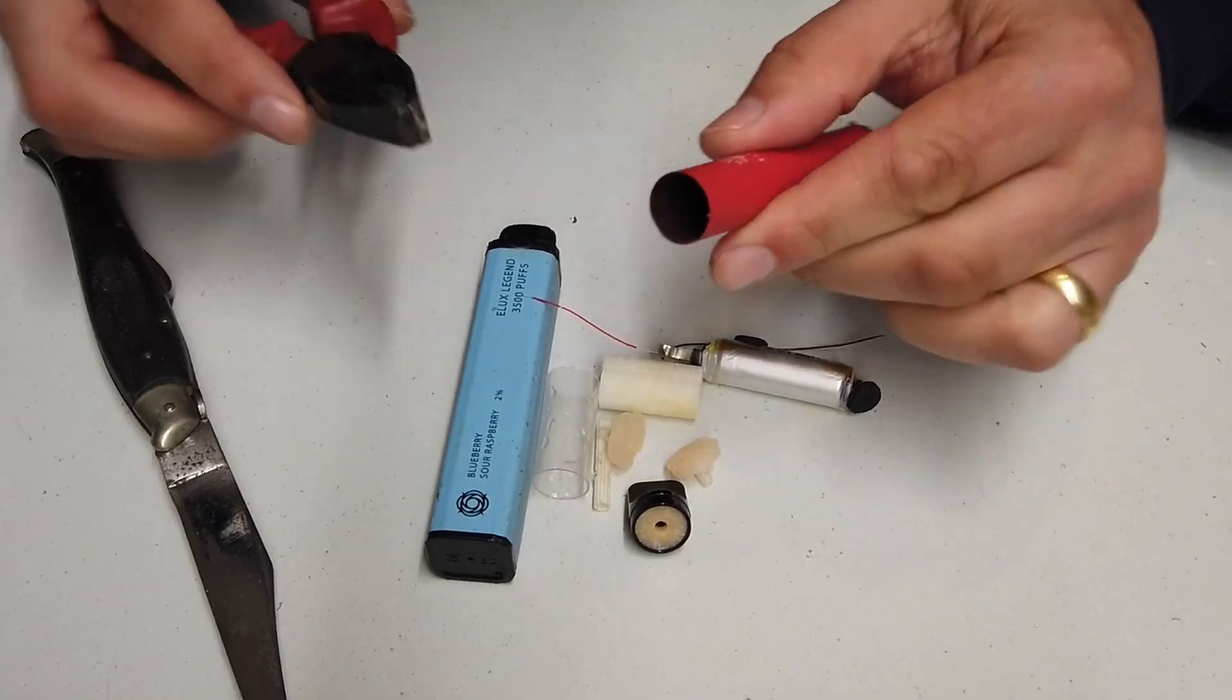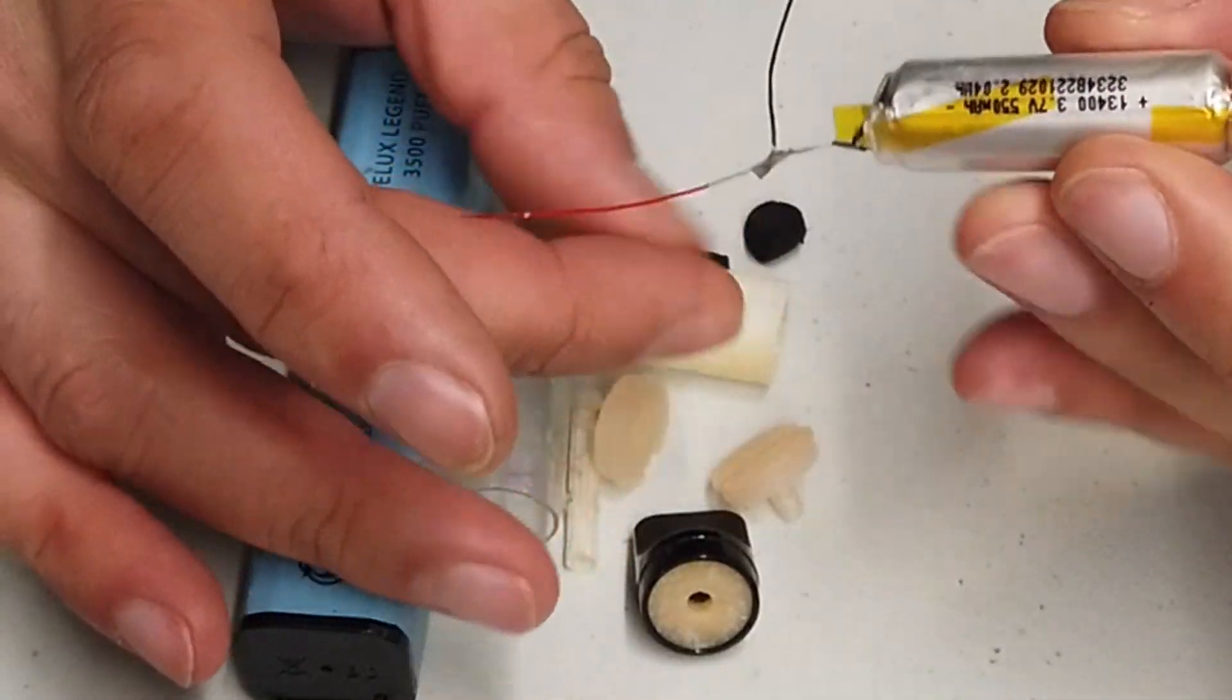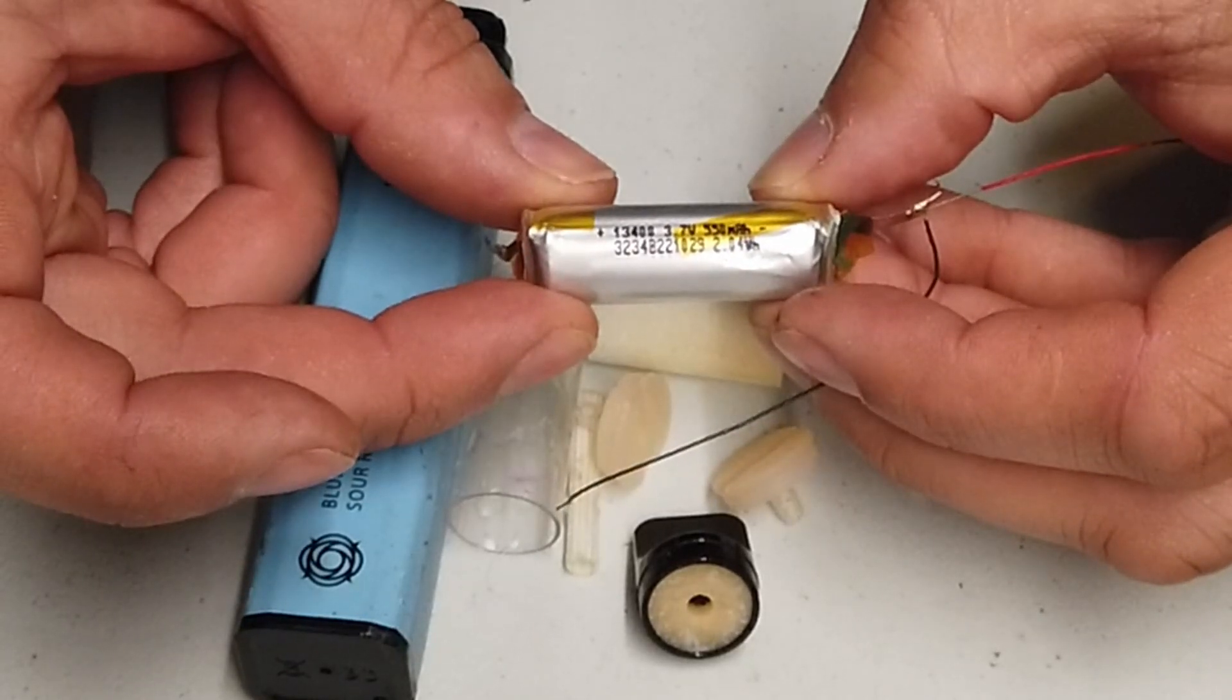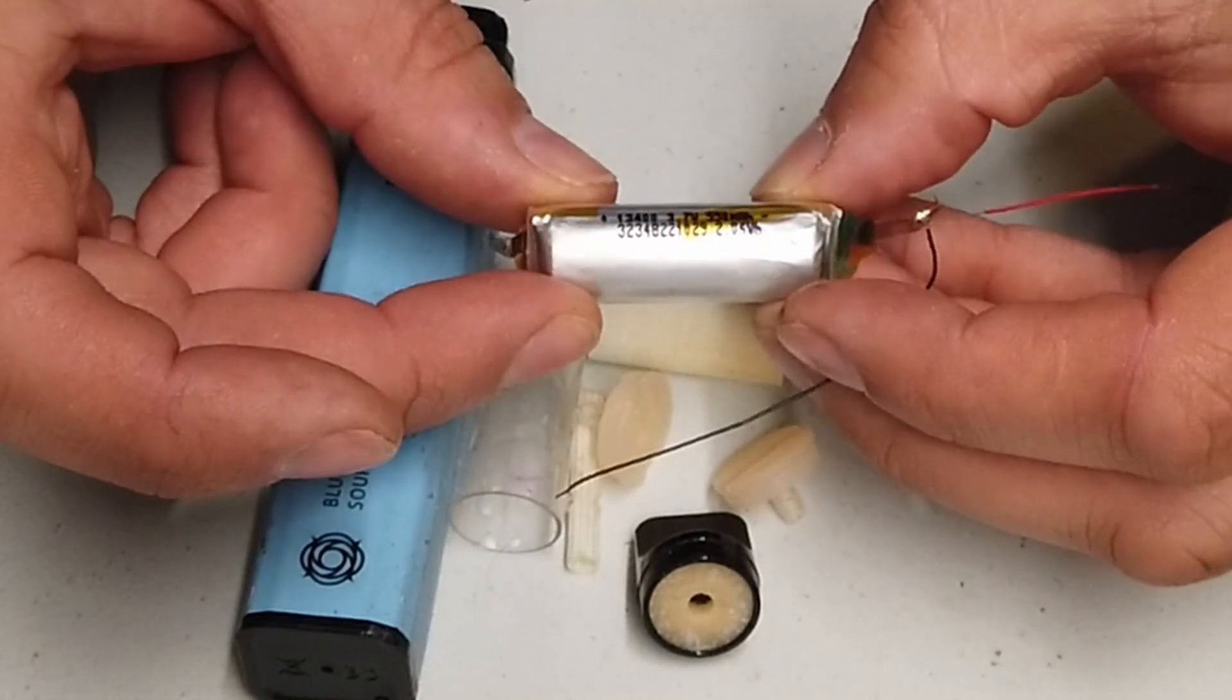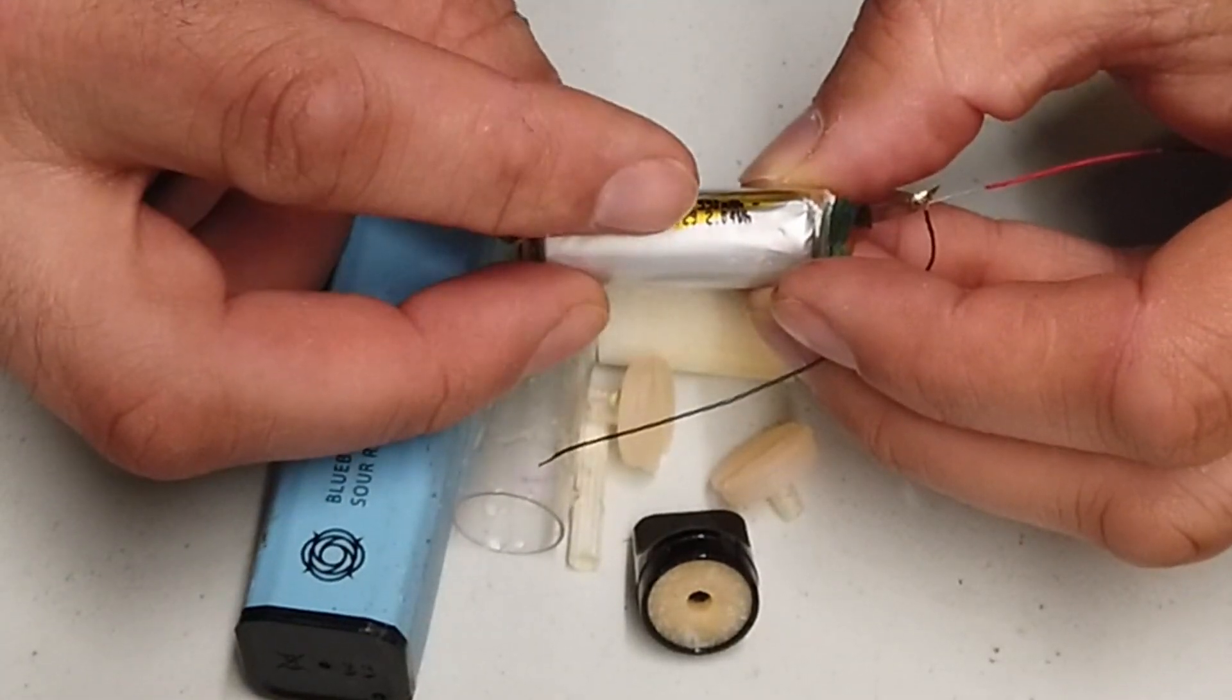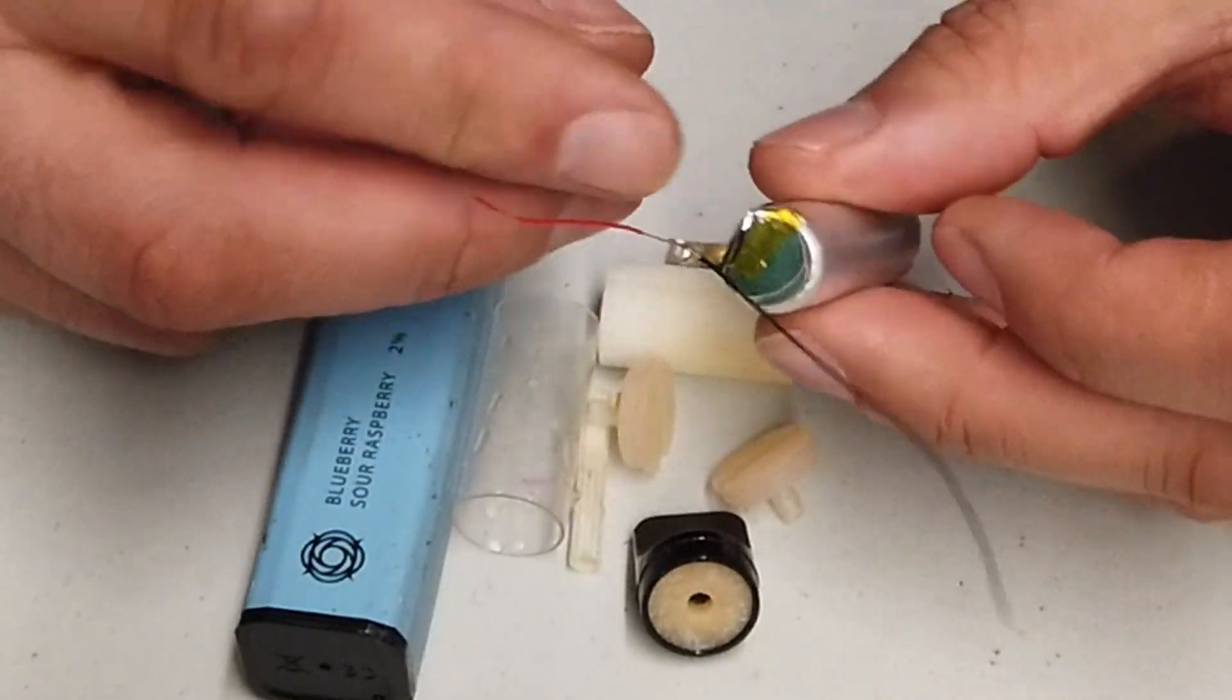So let's have a look, what have we got here? We have got a 3.7 volt, 550 milliamp power, 13400 battery. That is quite cool. And it says it's about 2.04 watt hours. That is really quite cool.